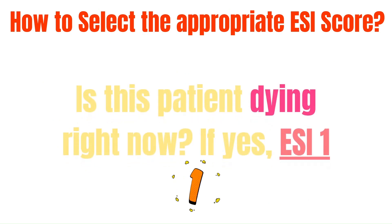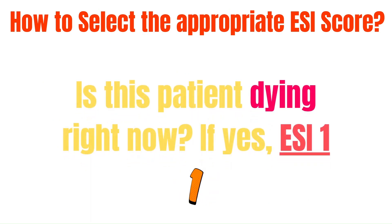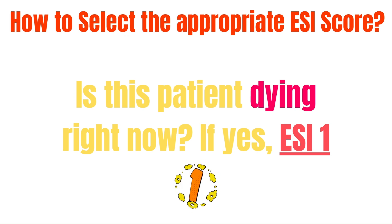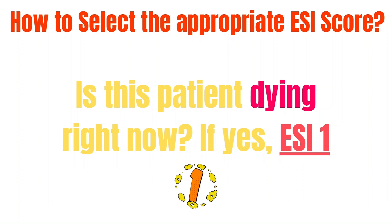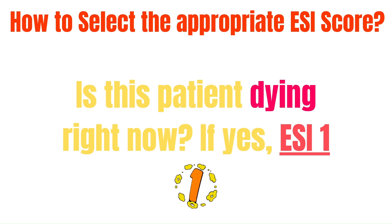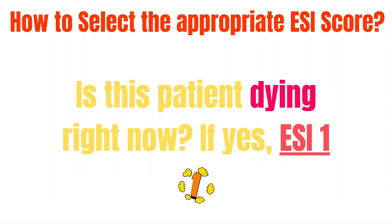How do you select the appropriate ESI score for a patient? After you've done your assessment, obtained a history and a set of vital signs, ask yourself: is this patient dying? If yes, they're an ESI of 1. For example, is this patient not breathing? Are they severely hypoxic? Do they have a pulse? Are they hypotensive with signs of poor tissue perfusion — like decreased mentation, pallor, or diaphoresis? Those would be an ESI of 1.